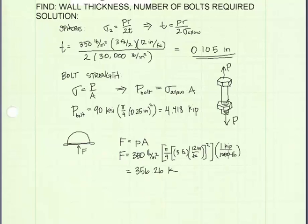and then we will divide by 1,000 in order to convert our answer from pounds into kips, and we get a value of 356.26 kips.